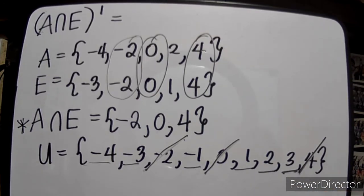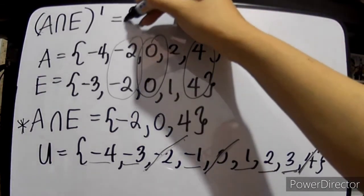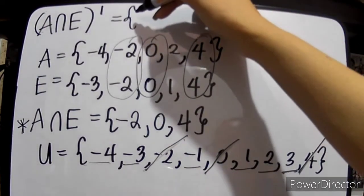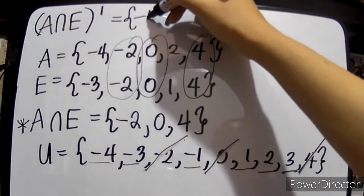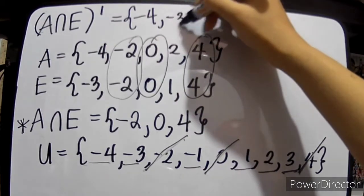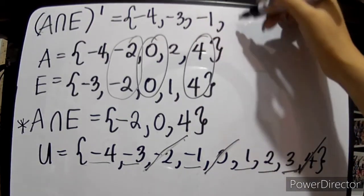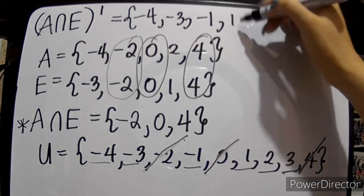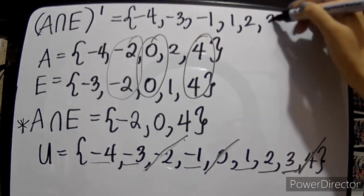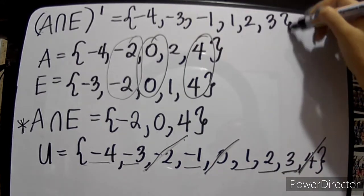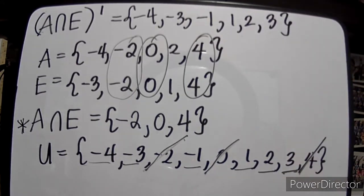So {negative 4, negative 3, negative 1, 1, 2, 3} is our answer — the complement of A intersection E.